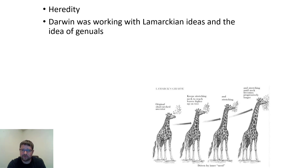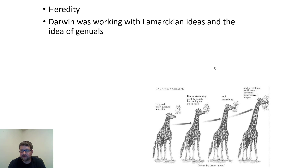Lamarckian ideas, for example, held that a giraffe would keep stretching its neck until it could reach a tree branch, becoming progressively longer — and that if a criminal had a hand cut off, their child would be born without a hand. These ideas were never properly tested and obviously failed experimental scrutiny, but much of the scientific community was basing their ideas on Lamarck. Darwin's gemmules idea was also incorrect, but no one had a good working theory of heredity.